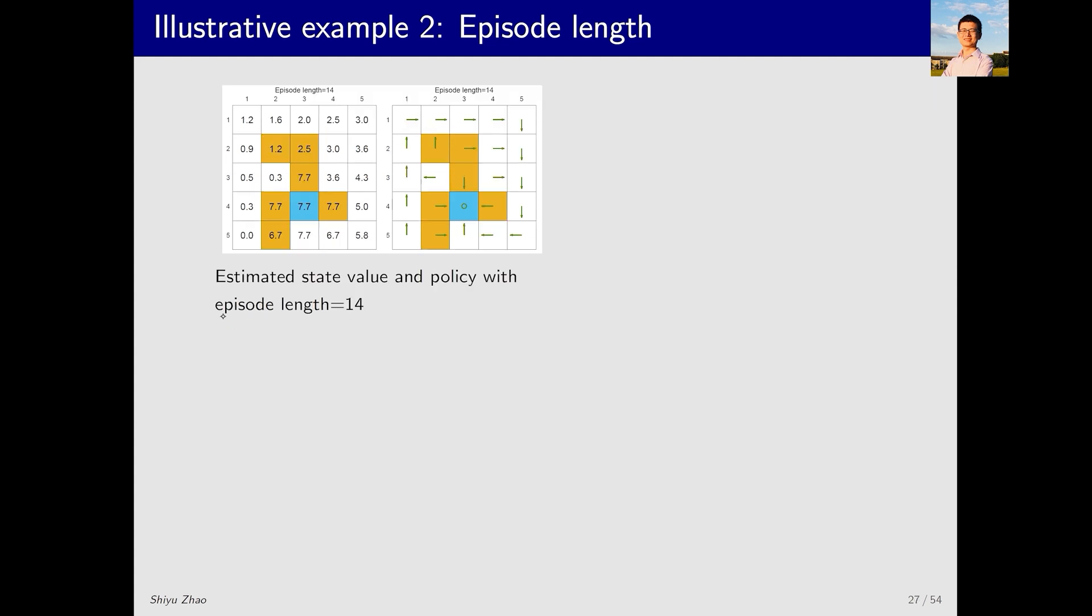If we keep increasing it to a length of 14 steps, it means it takes 14 steps to reach the target from the starting point. Let's take a look: 1, 2, 3, 4, 5, 6, 7, 8, 9, 10, 11, 12, 13, 14. After reaching the target, we receive a positive return, and the corresponding value becomes positive.